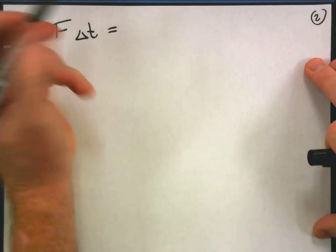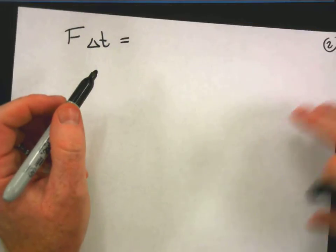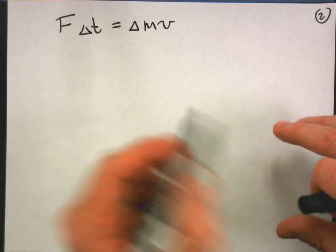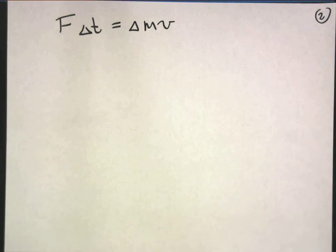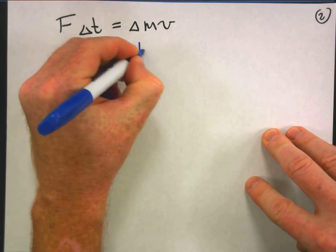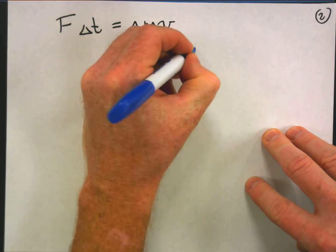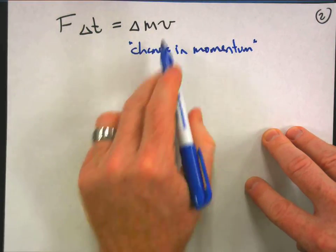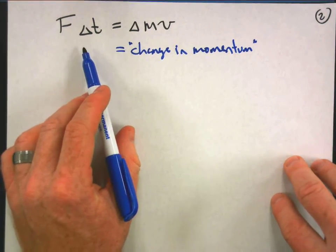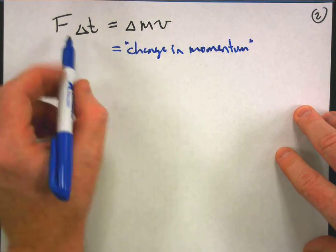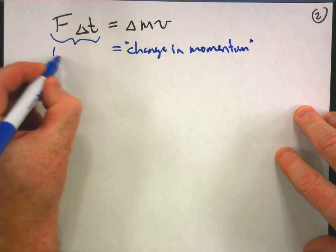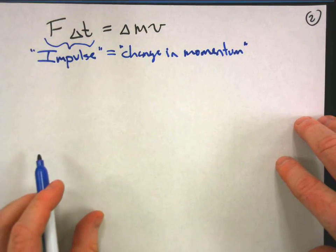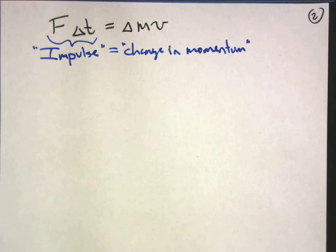Force times the time interval equals, and I'll keep that delta out in front, change in mass times velocity, change in momentum. That's how you would read that literally, that's what that side means. What about this side, force times time? This deal right here has its own name, and this is your impulse. It's a real thing in physics. Impulse is a force applied for a certain period of time.